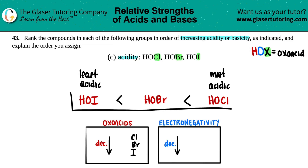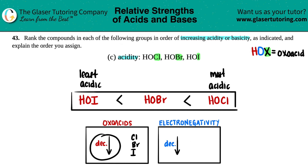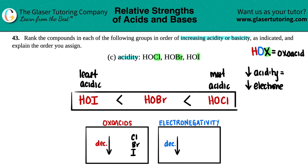Now for the explanation: oxo acid acidity has everything to do with electronegativity. Decreasing acidity going down the group is linked to a drop in the electronegativity of the central atom. For oxo acids, the more electronegative the central element, the more acidic the compound — so since chlorine is more electronegative than iodine, HOCl is more acidic than HOI.